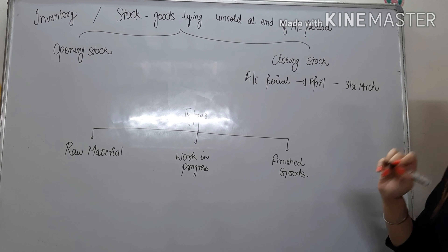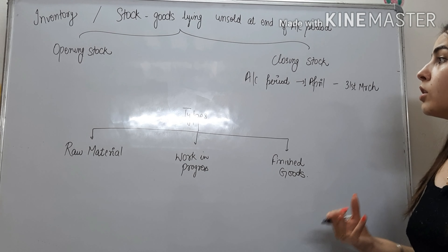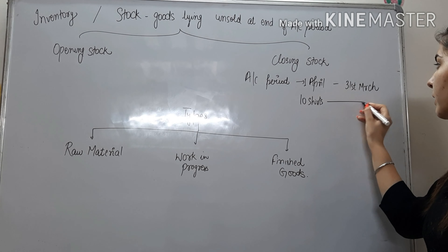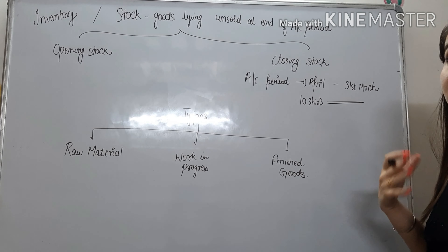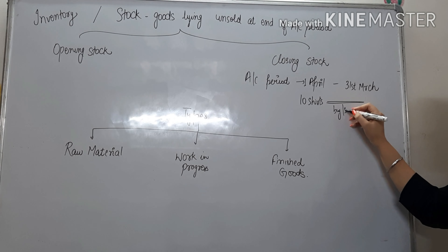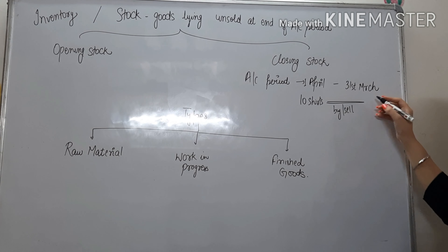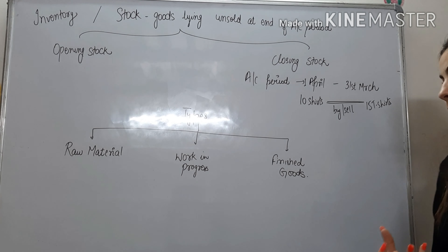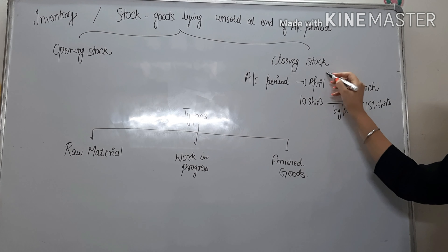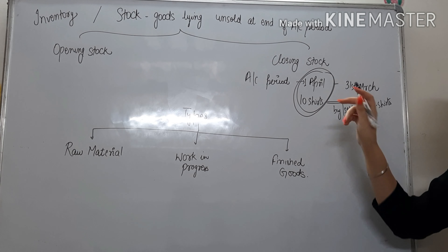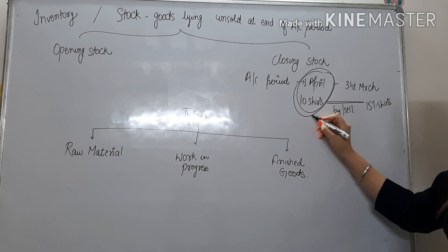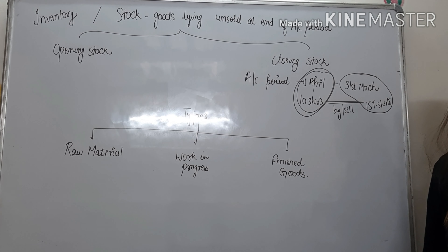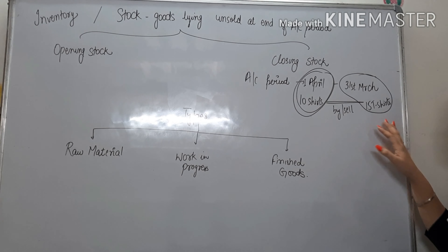Toh kya hota hai? 1st April mein, meri shop mein jitni t-shirts padhi hongi — suppose 1st April mein meri shop mein 10 t-shirts padhi hai. During the year, this April to March, mein ne bhoat sari t-shirts buy bhi ki hai, bhoat sari t-shirts sell bhi ki hai. Or at the end of the year, mere paas 15 t-shirts abhi bhi unsold hai. The stock which is on the opening date — jo 1st April hai, yoh opening date of year pe stock hai — this is my opening stock. Aur jo meri stock poore saal ke akhir mein mere paas bacha hai, jo abhi tak bika nahi hai, usko mein closing stock bolungi.